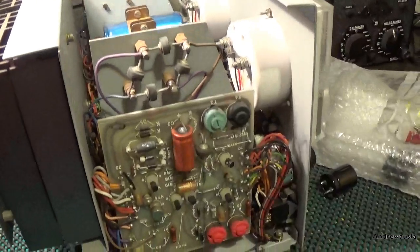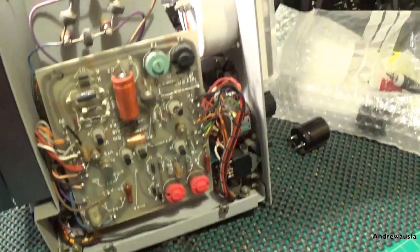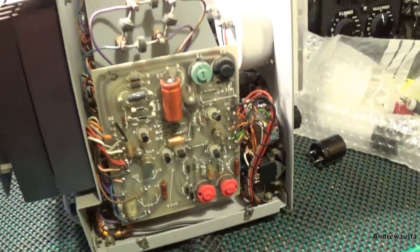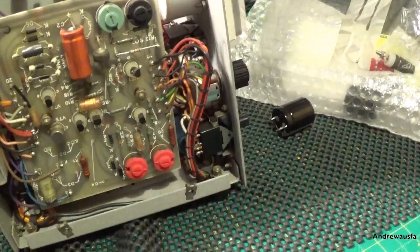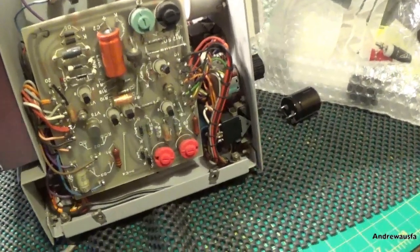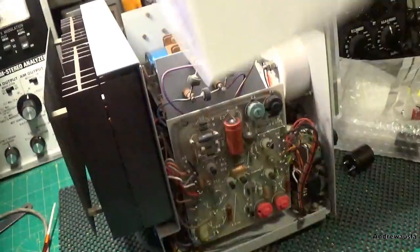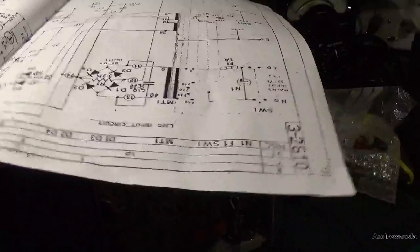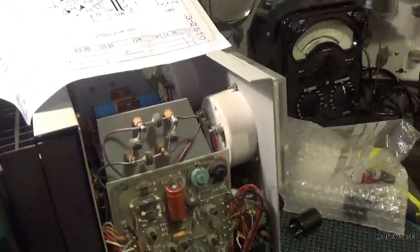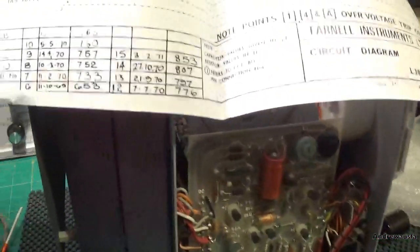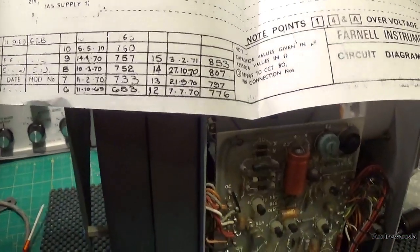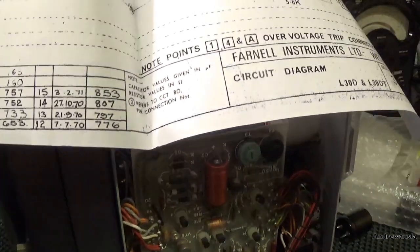Right, so what I'm going to do is power this up. The seller had powered it up, so we'll see what happens. I'm just trying to look for a date on it. So I've got the circuit for it here. You can see all the dates here, look: 1969, 1970, 71.